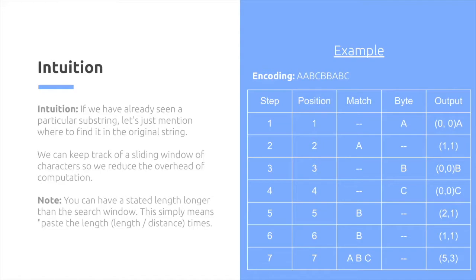For step 7, now we have A, B, C in a row. And since we have A, B, C in a row, we can just simply reference 5, 3, and then we get the remaining portion over there.